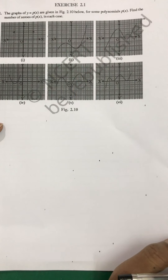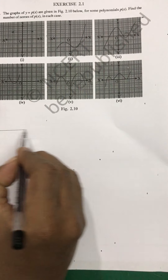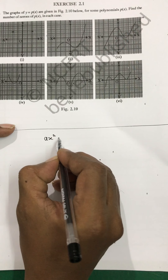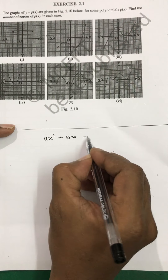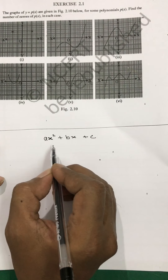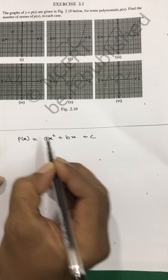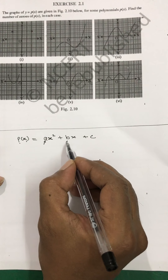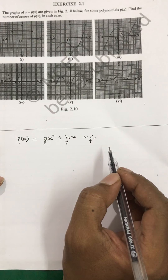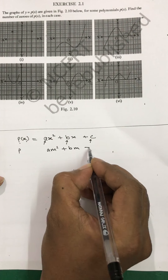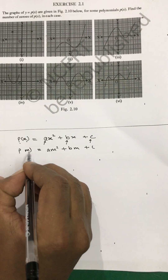Before going further, I would like to tell you the general form of a quadratic equation is ax squared plus bx plus c. This is the general form and the polynomial is written as p of x, where a is the coefficient of x squared, b is the coefficient of x, and c is the constant. If we have am squared plus bm plus c, then it will be written as a polynomial in the form of m.